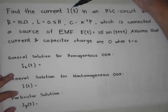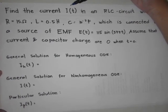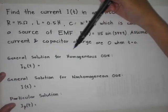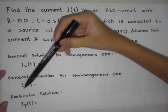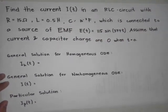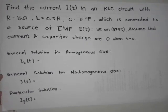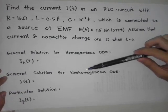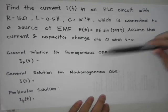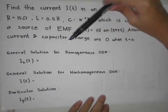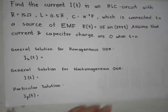In finding the current, we have first to find the general solution for the homogeneous ODE. Next is the particular solution. After that, the general solution for the non-homogeneous ODE — which will be the general solution for the homogeneous ODE plus the particular solution.